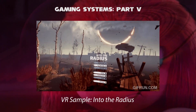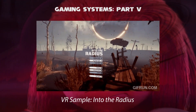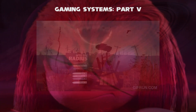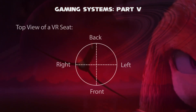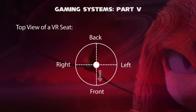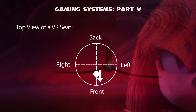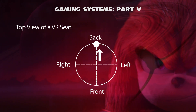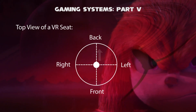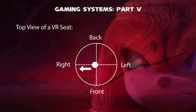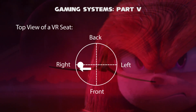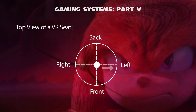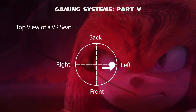When you sit on a seat, the seat can tilt in all directions. In racing, for example, the seat will tilt towards the front if you go down, and back when you go up. For turns, the seat will tilt towards the right when you turn right, and left when you turn left.